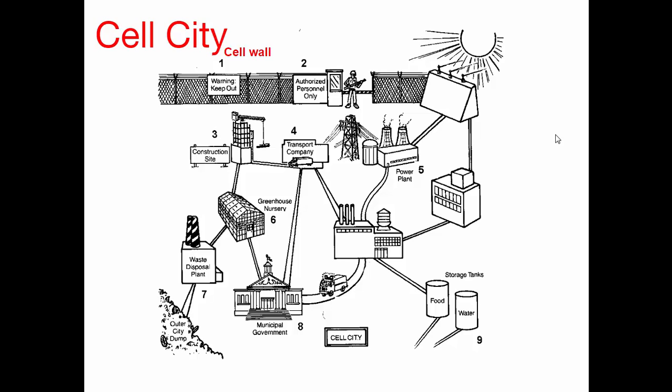How about this gatehouse, this guardhouse? That would be like the cell membrane, correct. Because the cell membrane is sort of what determines which things can enter and leave the cell — the cell membrane regulates that. So that would be like this guardhouse.